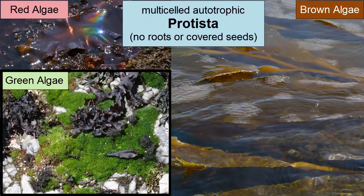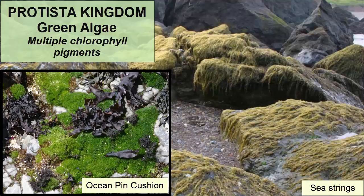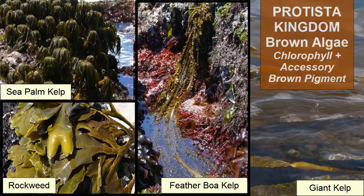The Chlorophyta phylum, or green algae, contains multicellular autotrophs with no pigments other than chlorophyll, though they may contain many different chlorophyll pigment types. These organisms include sea strings, sea lettuce, and ocean pincushion. The Phaeophyta phylum, or brown algae, contains multicellular autotrophs with chlorophyll and an accessory brown pigment.